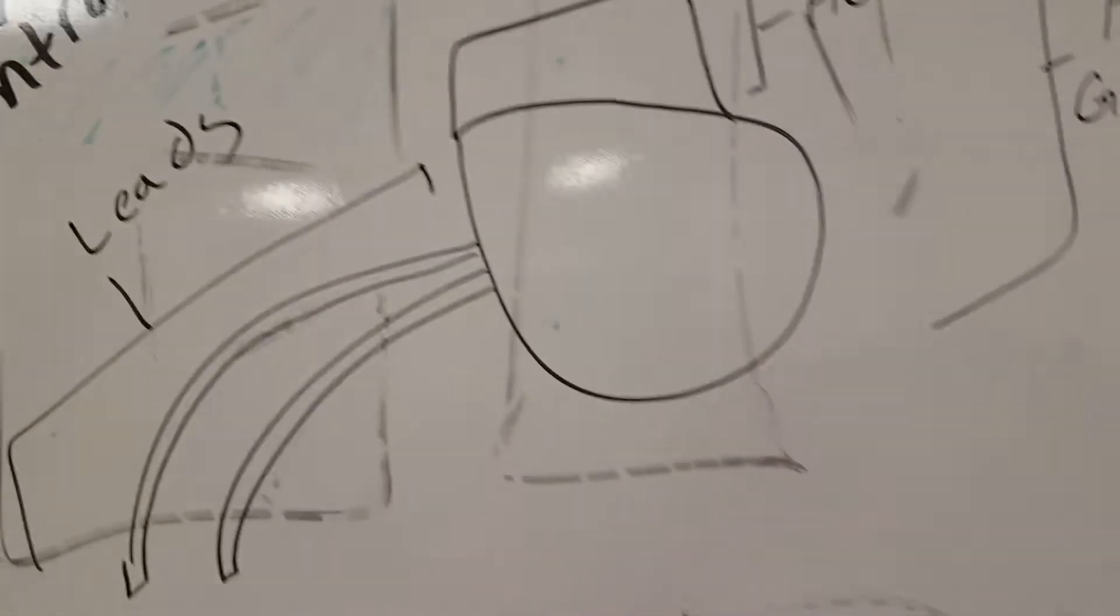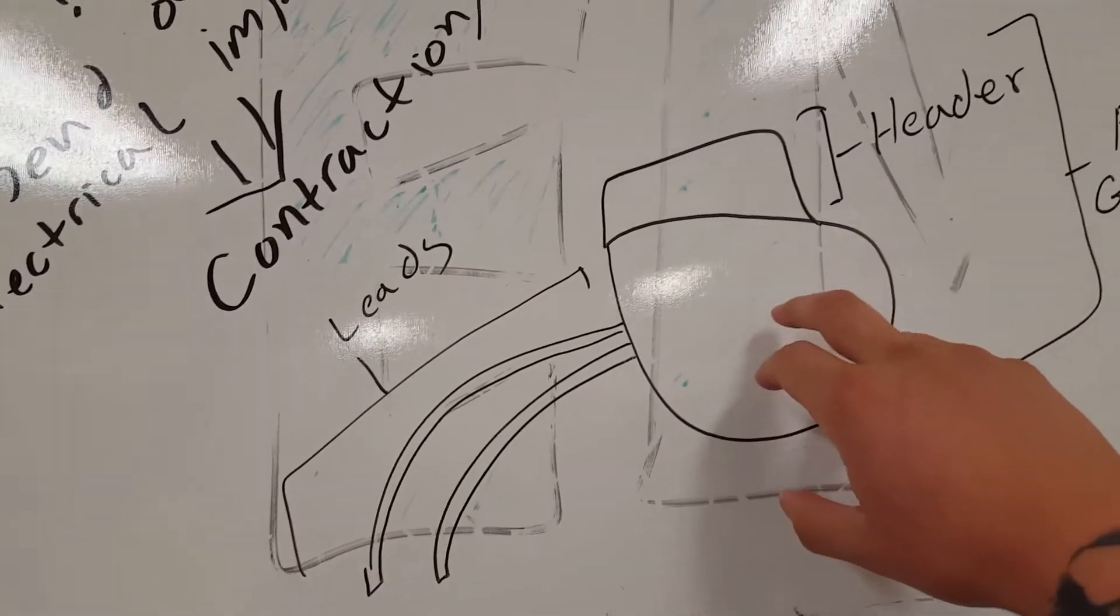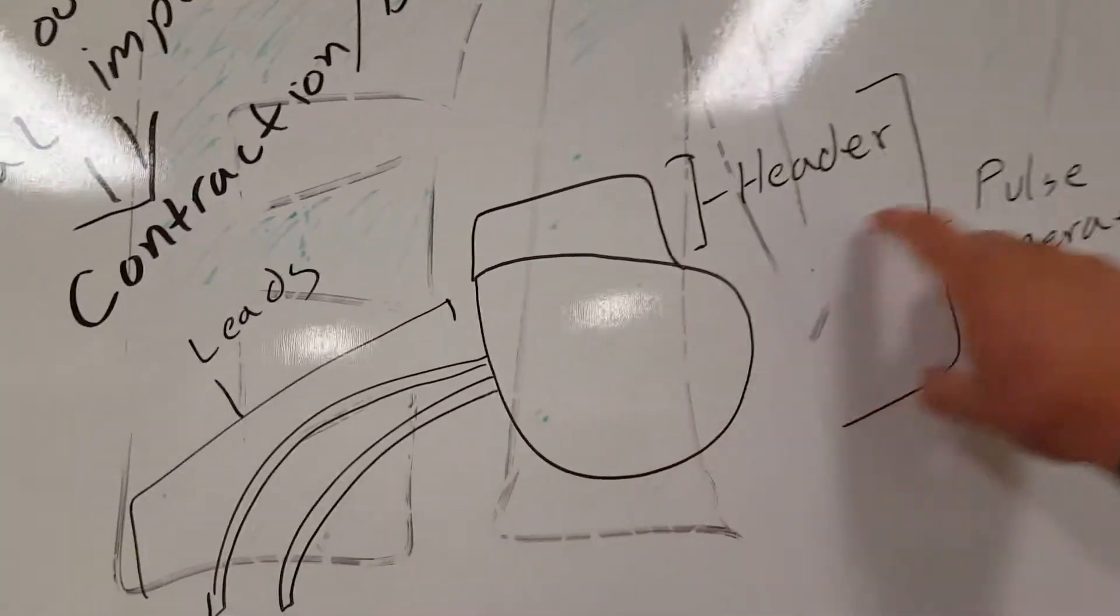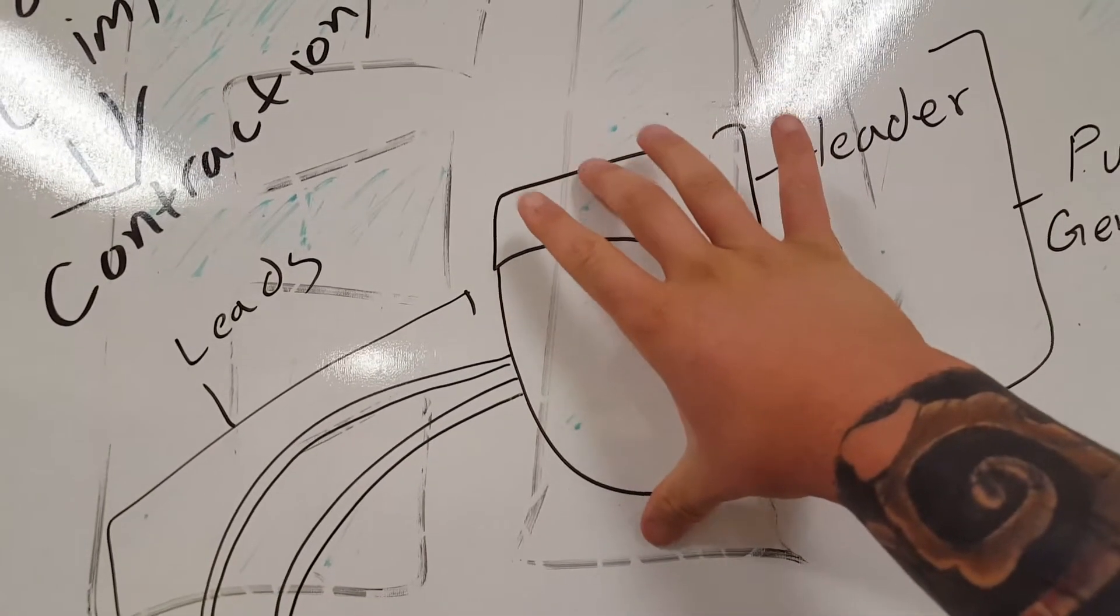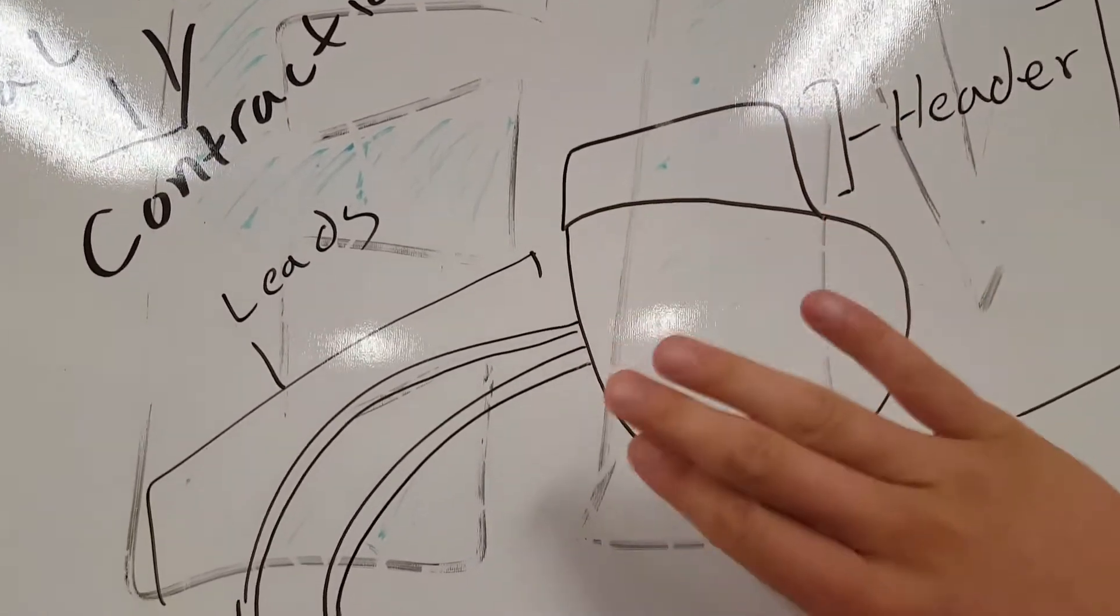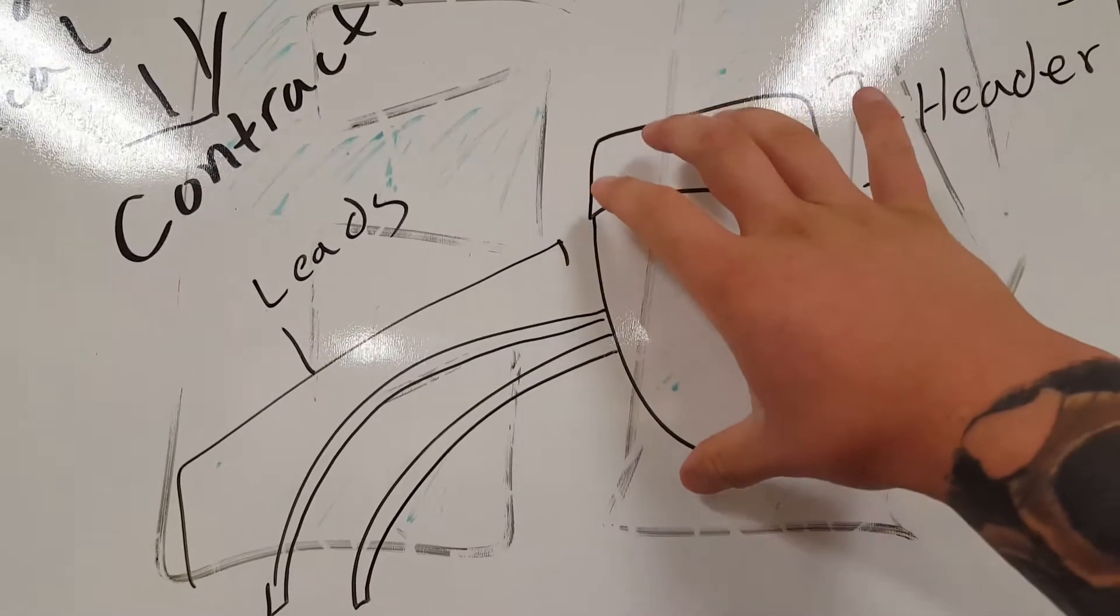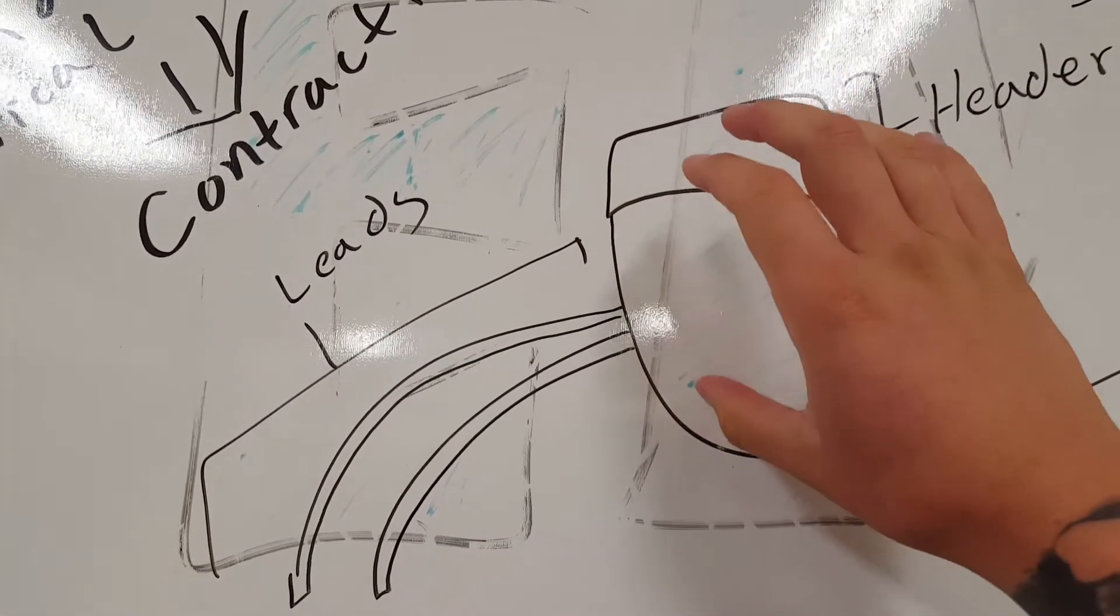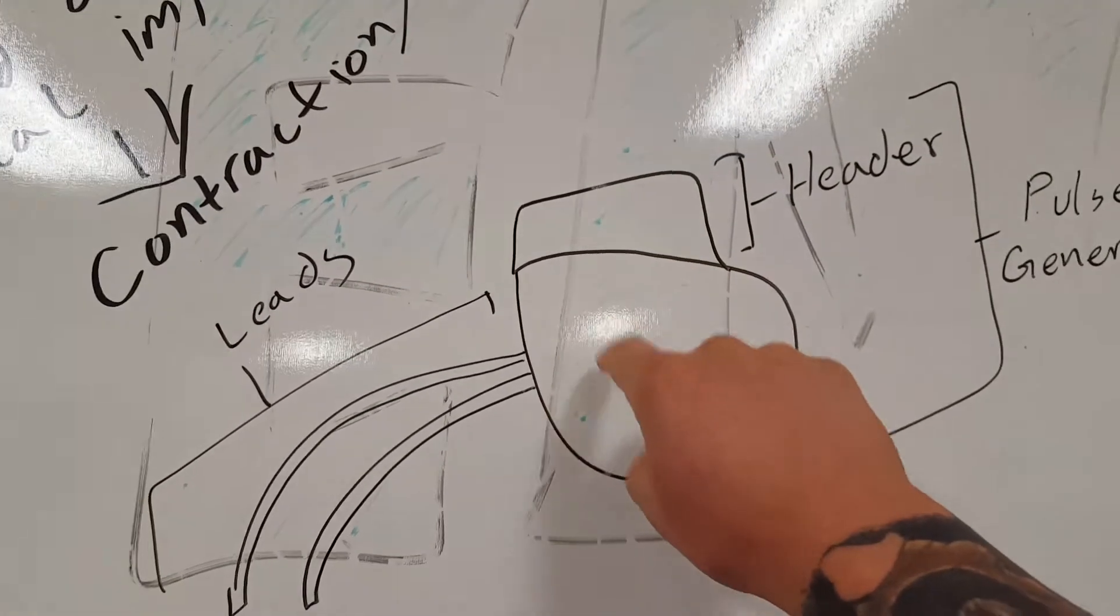So a pacemaker - this is a general drawing of a pacemaker. So you have what's called the can or the pulse generator, which is the entire circuit. This is where the circuit and the battery are. When you see that little bulge on your patient on the chest, this is what you're looking at. For the most part, this will be bulging out of your patient's chest. This is the actual pacemaker itself.